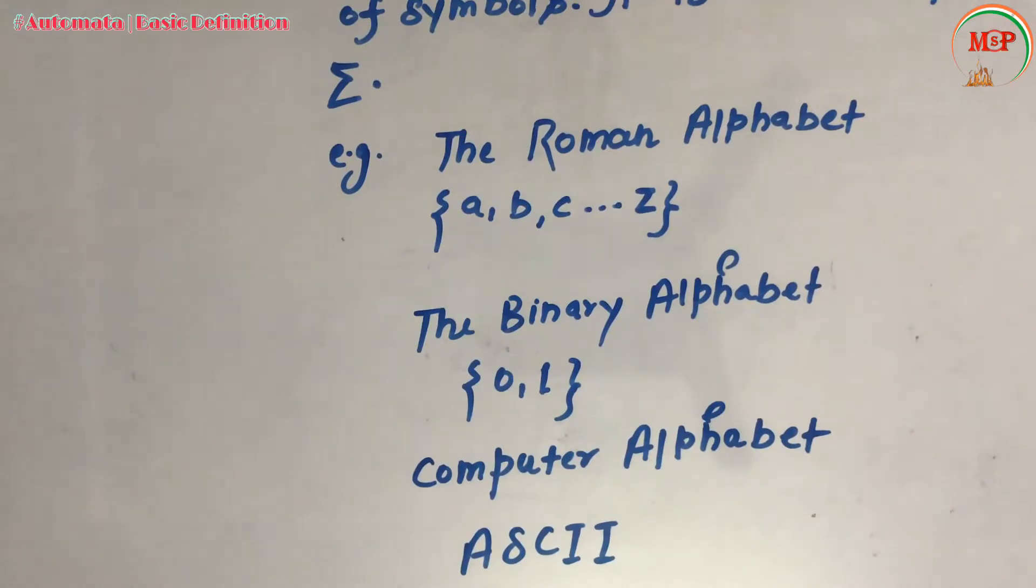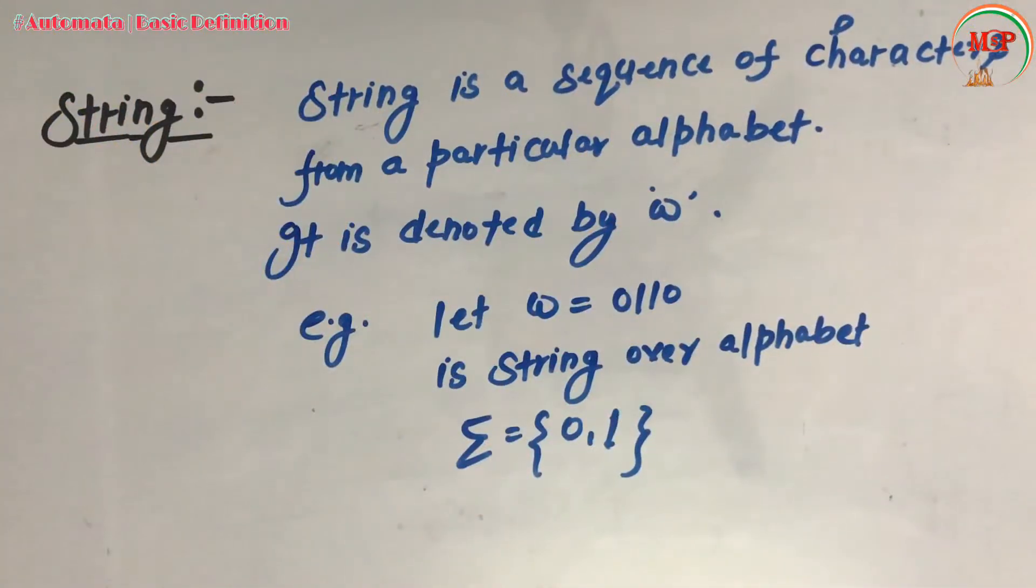The next definition is string. A string is a sequence of characters from a particular alphabet and it is denoted by small w. If Sigma is equal to {0, 1} is an alphabet, then we can take the string w = 0110. That is, if the given alphabet is {0, 1}, then we can only take this string with either 0 or 1 combination.